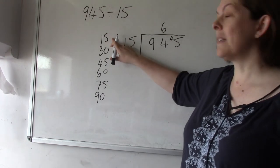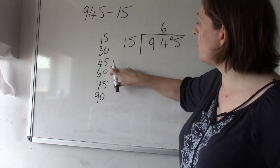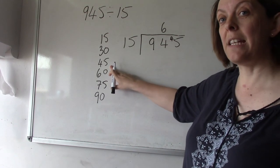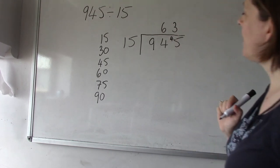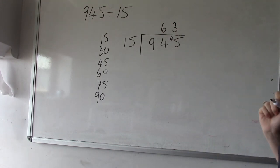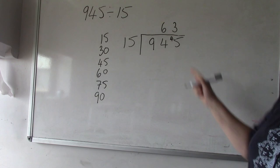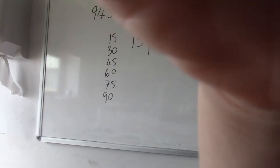And I can go over to my table that I've already written out. I go 1, 2, 3. 15 goes into 45 three times exactly. So I'm going to pop that up there. So the answer to what is 945 divided by 15? 63.